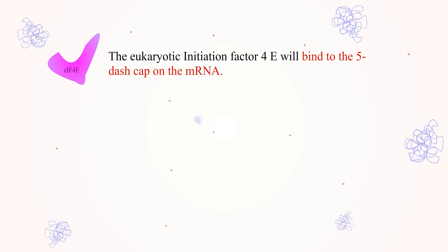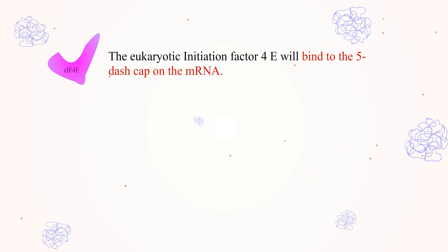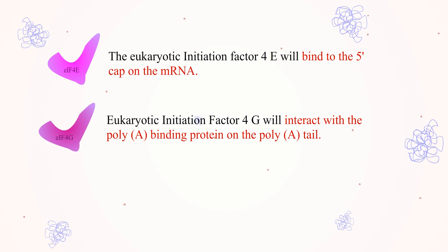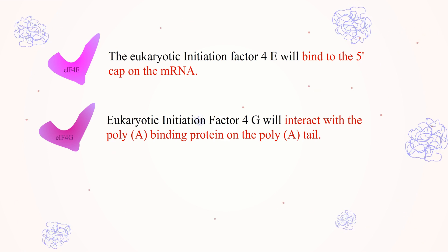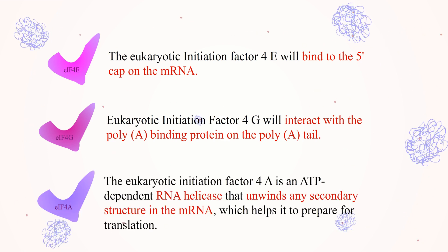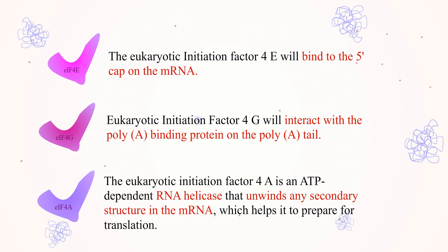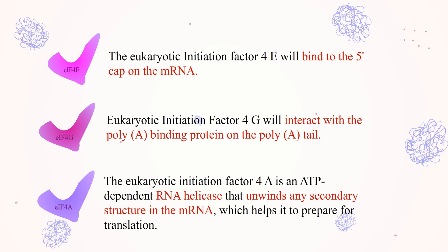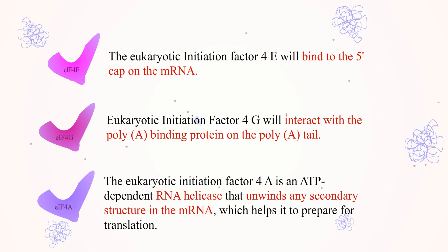The eukaryotic initiation factor 4E will bind to the 5' cap on the mRNA. Eukaryotic initiation factor 4G will interact with the poly(A) binding protein on the poly(A) tail. The eukaryotic initiation factor 4A is an ATP-dependent RNA helicase that unwinds any secondary structure in the mRNA, which helps it to prepare for translation.